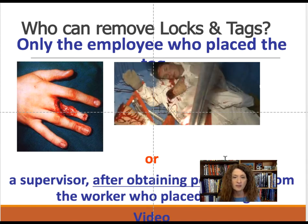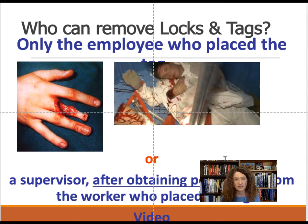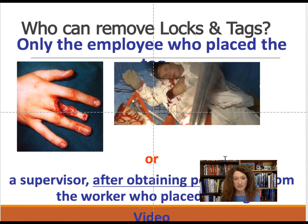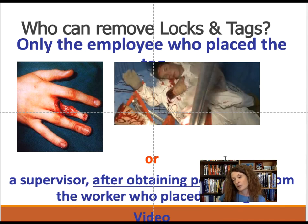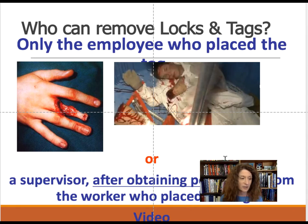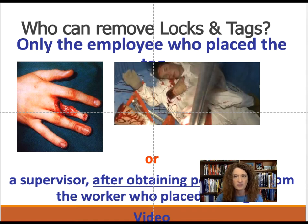Only the employee who placed locks and tags can remove them, or a supervisor after obtaining permission from that employee — though that is not the best practice in occupational safety and health. It's much better to have the worker remove it themselves. You may see people on campus or in maintenance facilities who carry their own personal locks on their belts.